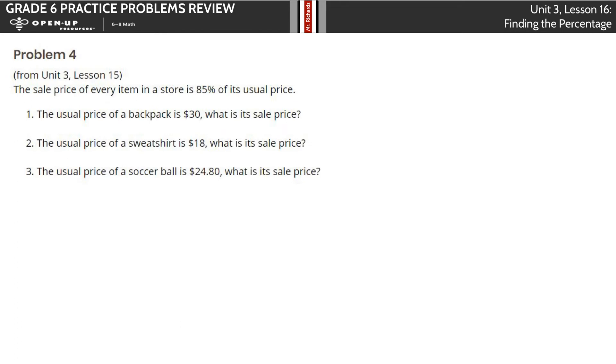The sale price of every item in a store is 85% of its usual price. So we're saving 15%, but the sale price is 85% of its usual. The usual price is $30. What's its sale price?